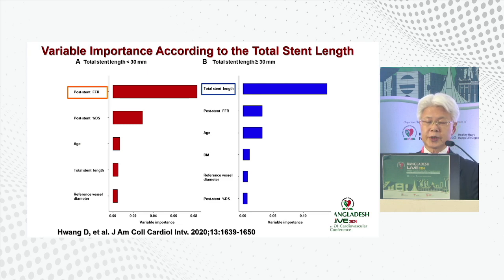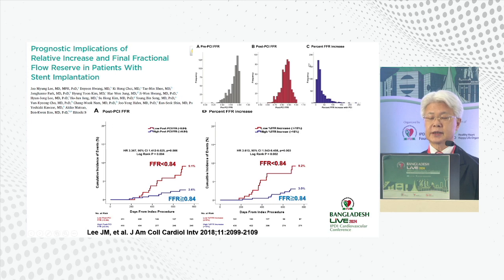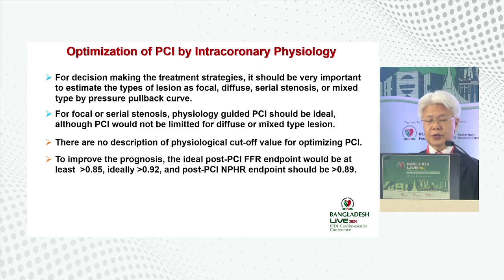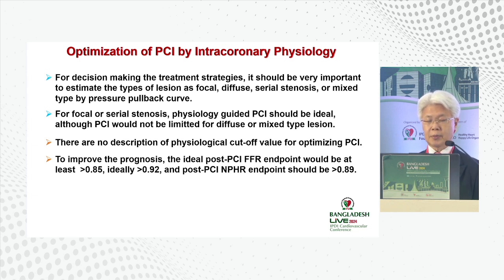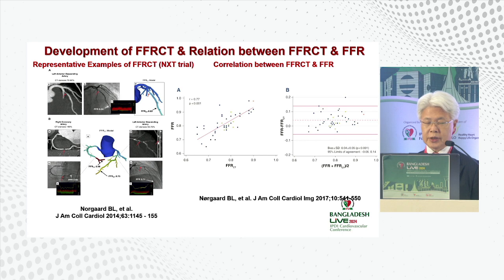If stent length is greater than 30 millimeters, stent length itself becomes the most predictive factor for future events. Other datasets show post-FFR should be more than 0.86 or more than 0.84. In summary, there is no fixed cutoff recommendation, but the ideal post-PCI FFR endpoint should be at least above 0.85, and ideally above 0.92. For non-hyperemic pressure ratio, the endpoint should be more than 0.89.